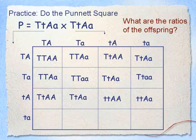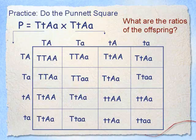The third row: first box is big T paired with little t and big A paired with big A. Second box: big T with little t, big A with little a. Third box: little t, little t with big A, big A. Fourth box: little t, little t with big A, little a. Last row: first box big T little t, big A little a; second box big T little t, little a little a; third box little t little t, big A little a; fourth box little t little t, little a little a.